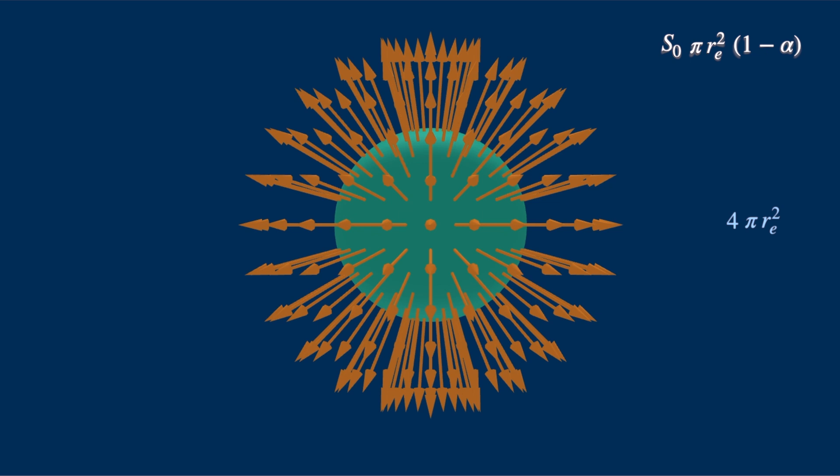And assuming an equivalent black body temperature of T underscore E, the Earth emits sigma times T underscore E to the power 4. This is per unit area.